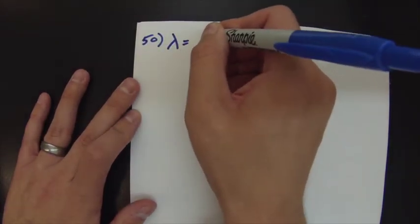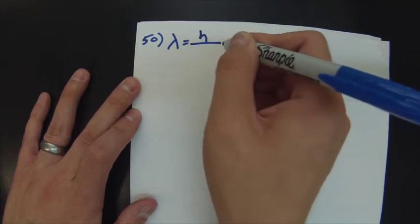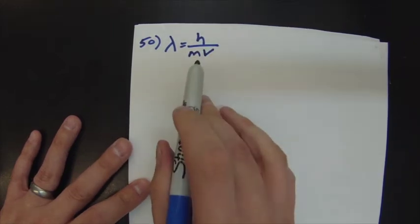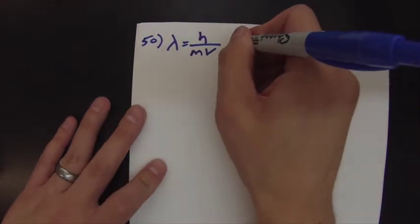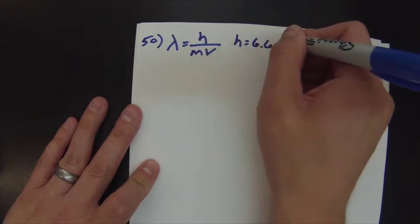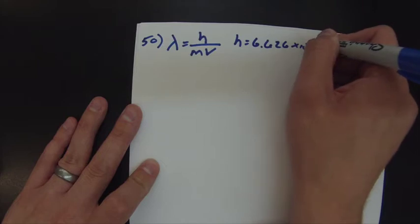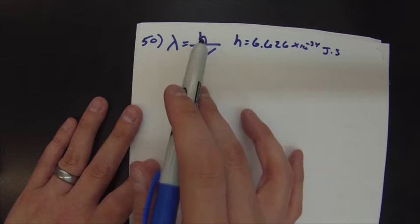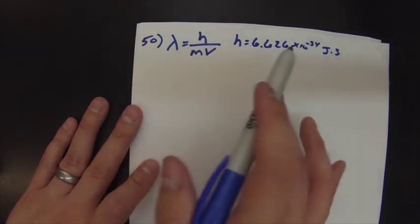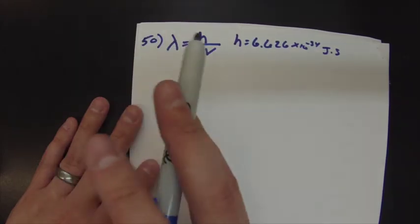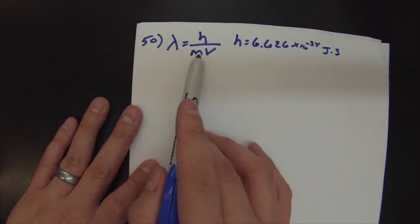Number 50 asks you to calculate the de Broglie wavelength. The de Broglie wavelength formula is: wavelength equals Planck's constant divided by mass times velocity — and this is velocity, not frequency, a mistake I see made all the time. Keep in mind Planck's constant is one of the smallest numbers you'll ever work with, so de Broglie wavelengths are usually super tiny.